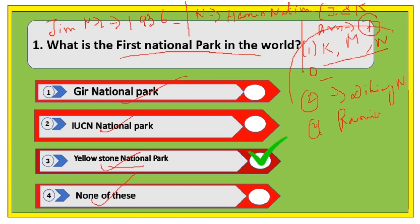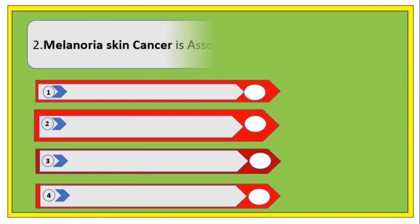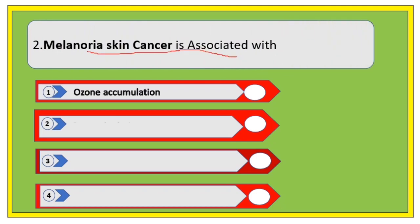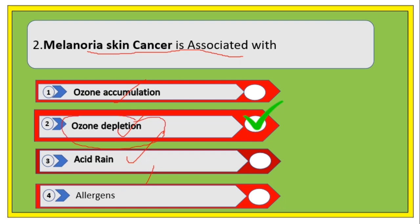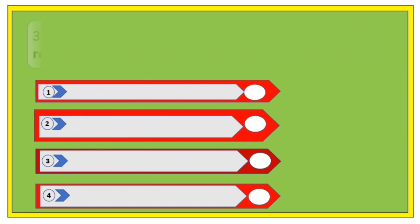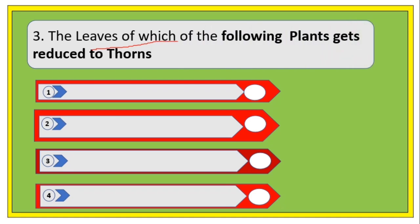So altogether we have seven national parks in Assam. Next question: malaria and skin cancer are associated with which of the following? Options are ozone accumulation, ozone depletion, acid rain, and allergens. The right answer is ozone depletion.